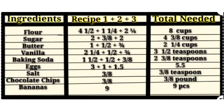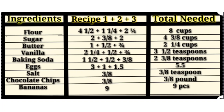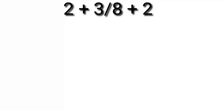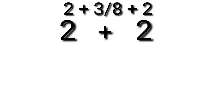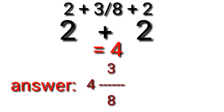The next ingredient is sugar. From banana bread, we have 2 cups of sugar; from chocolate chip cookies, 3/8 cup; and from sugar cookies, 2 cups. So we are going to add 2 plus 3/8 plus 2. We add the whole numbers first: 2 plus 2 equals 4. Then copy 3/8. So the answer is 4 and 3/8 cups of sugar.